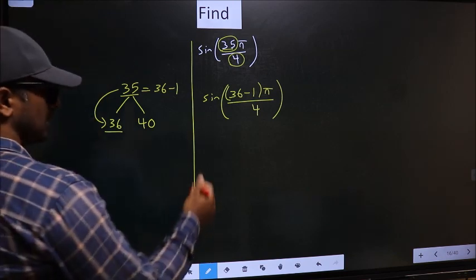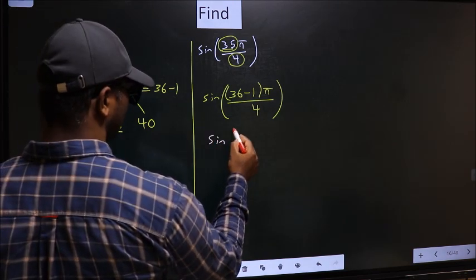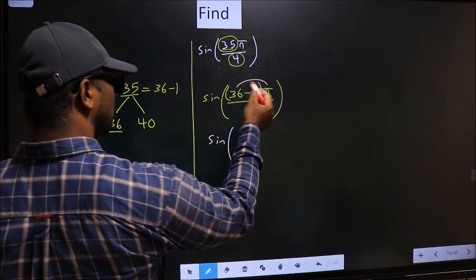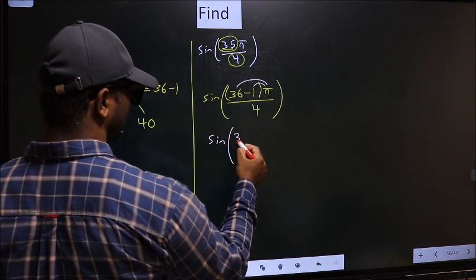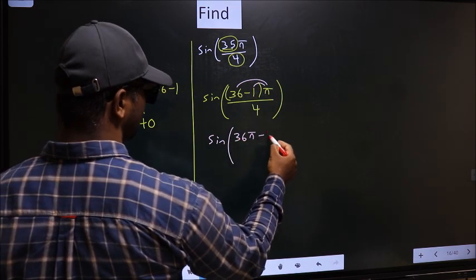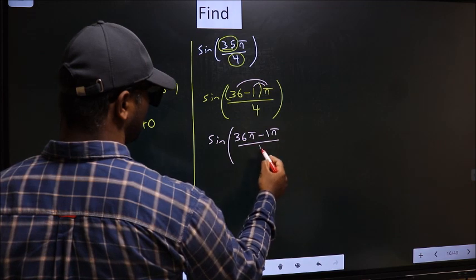Next, sin. Now you should open the brackets. So we get 36π minus 1π by 4.